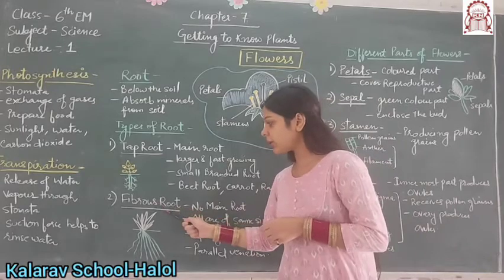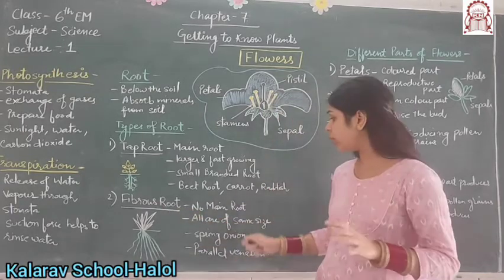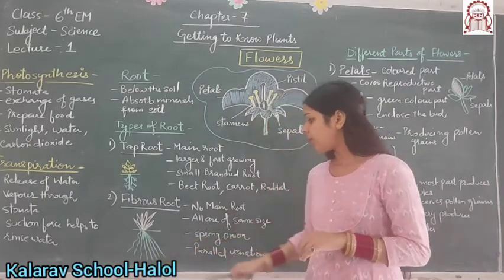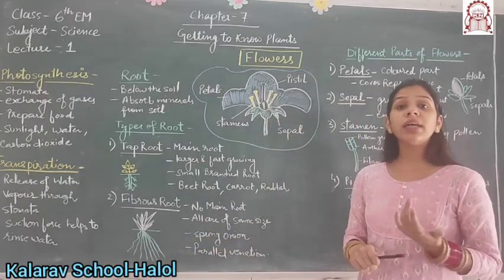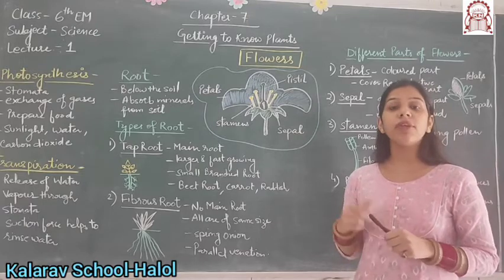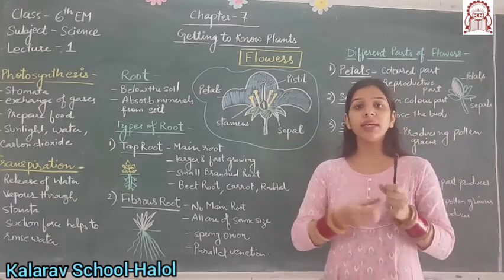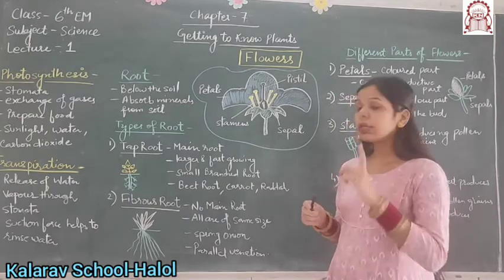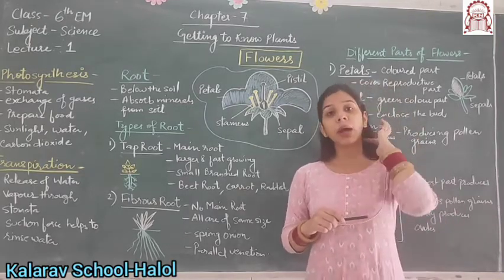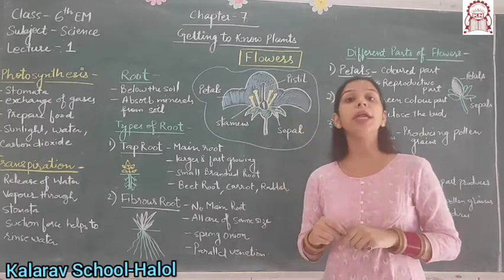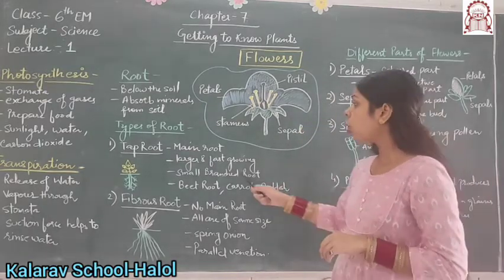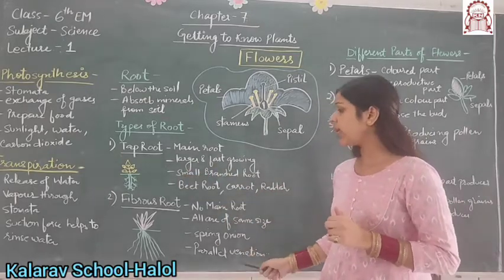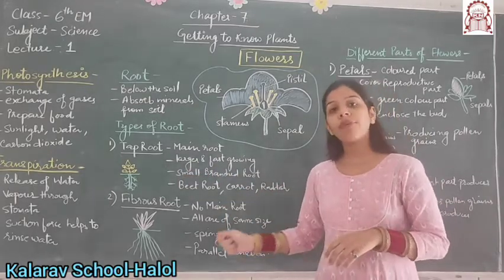Next is fibrous root. It has no main root. All roots are of the same size, as you can see. For example, spring onion, which you can easily find in the market, has fibrous roots. In the previous lecture, we had studied about reticulate venation and parallel venation. Reticulate venation is present in plants with tap root, and parallel venation is present in plants with fibrous root.